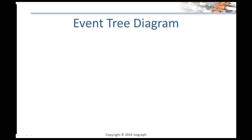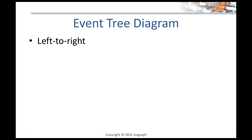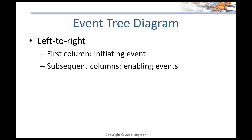Before we look at event tree examples, let me briefly explain what the event tree diagram looks like. You might be familiar with fault trees which are read top-down — you have your top event at the top and it goes down. Event trees are read left to right. Your initiating event is the leftmost column and you read left to right. The subsequent columns are enabling events — things that could influence the possible outcome. Based on the behavior of these systems, they lead you to one consequence or another.